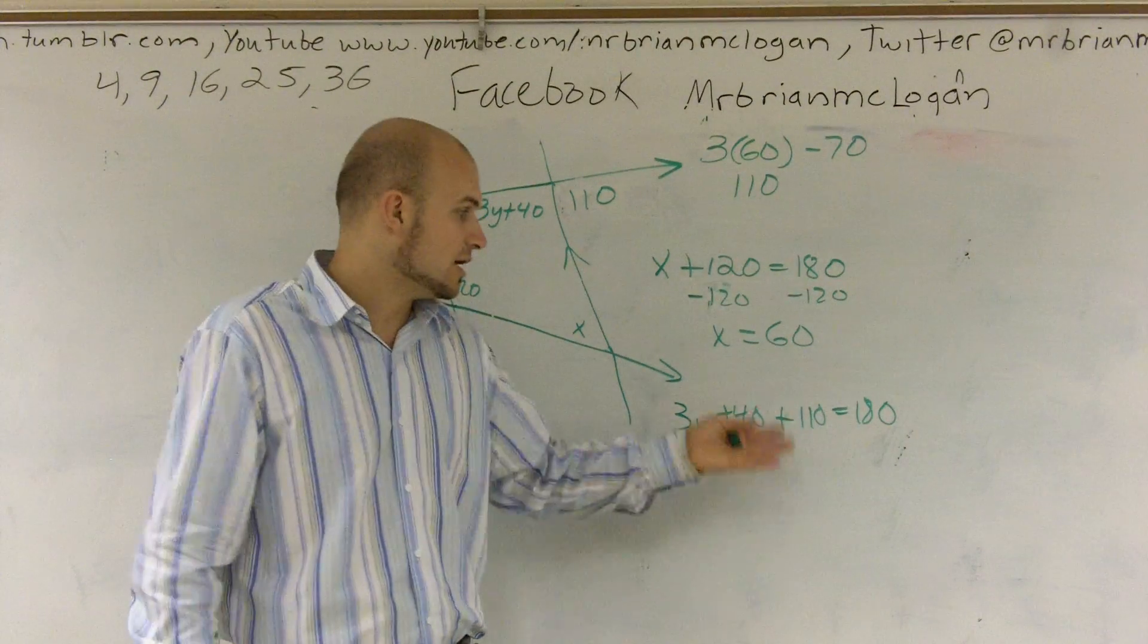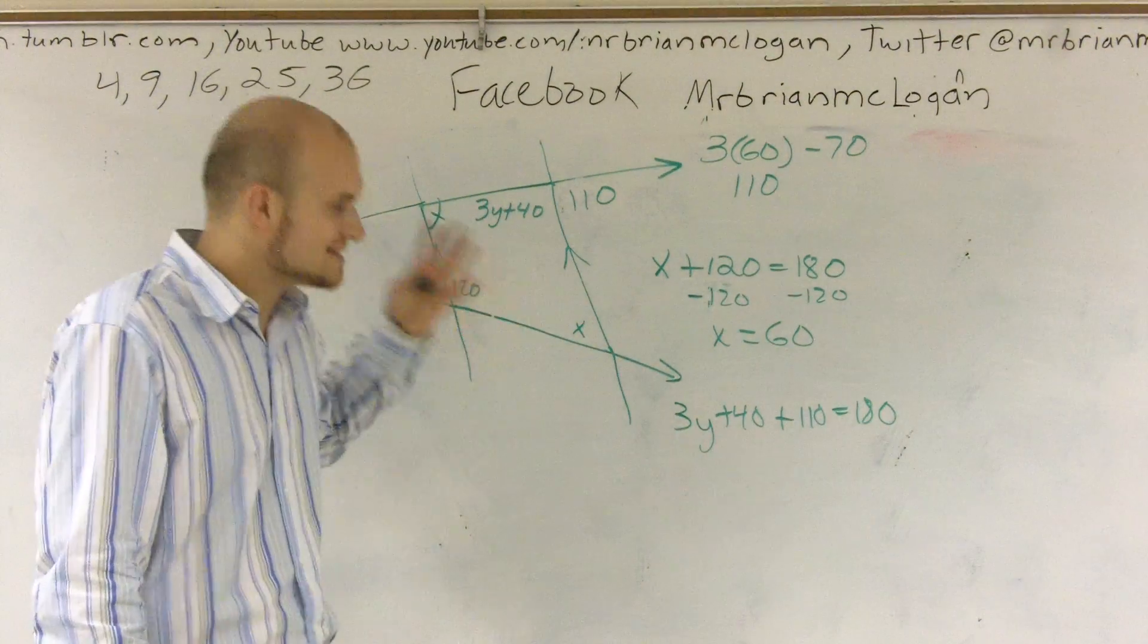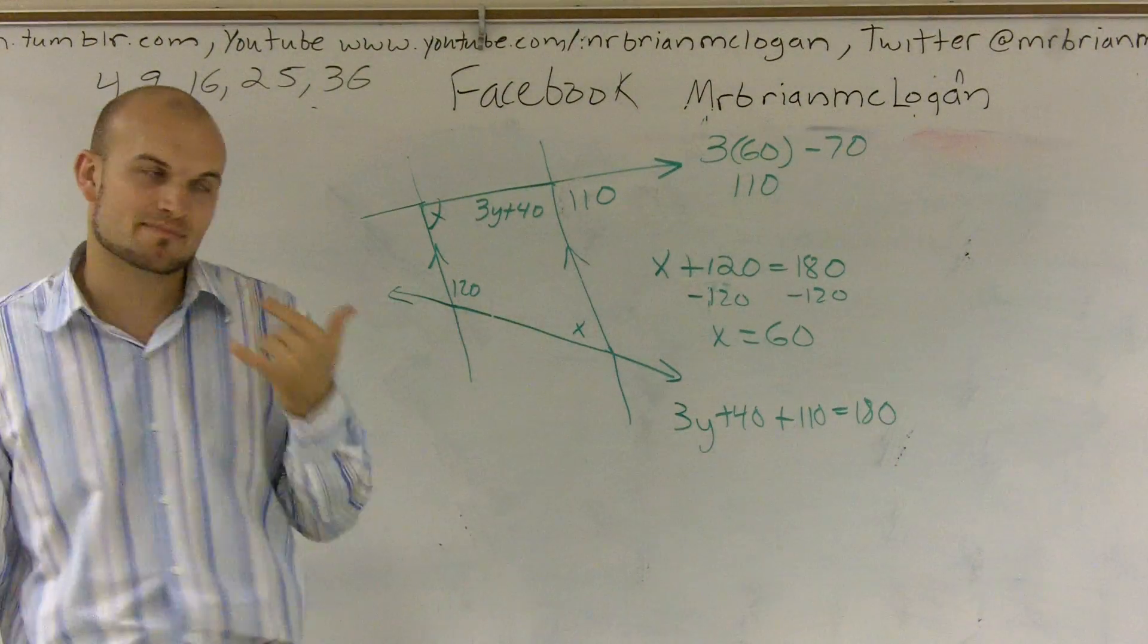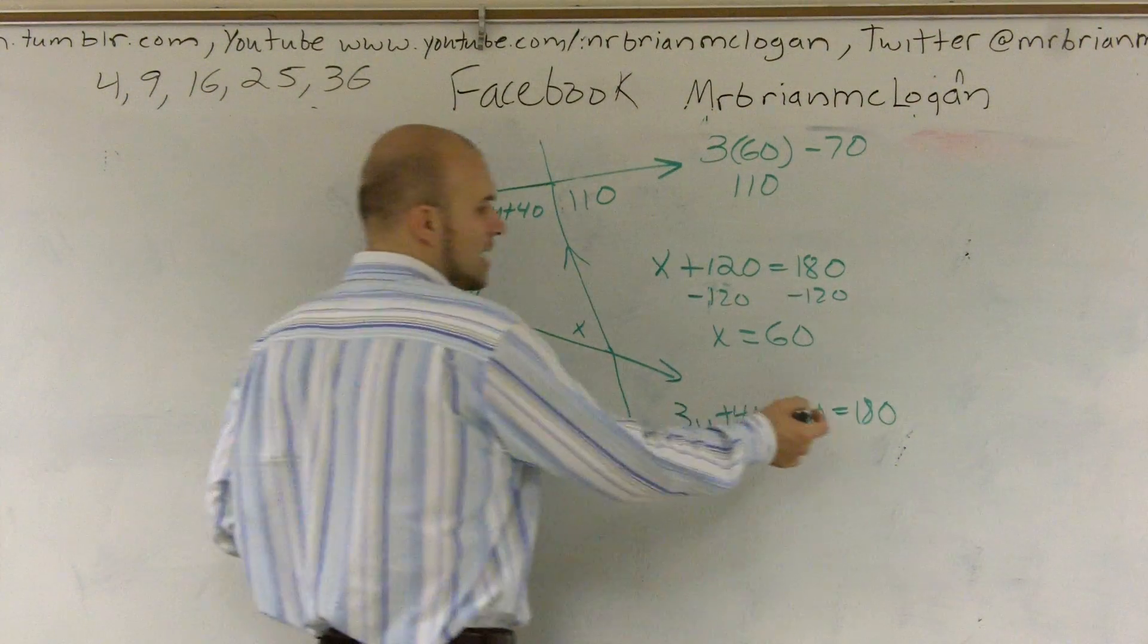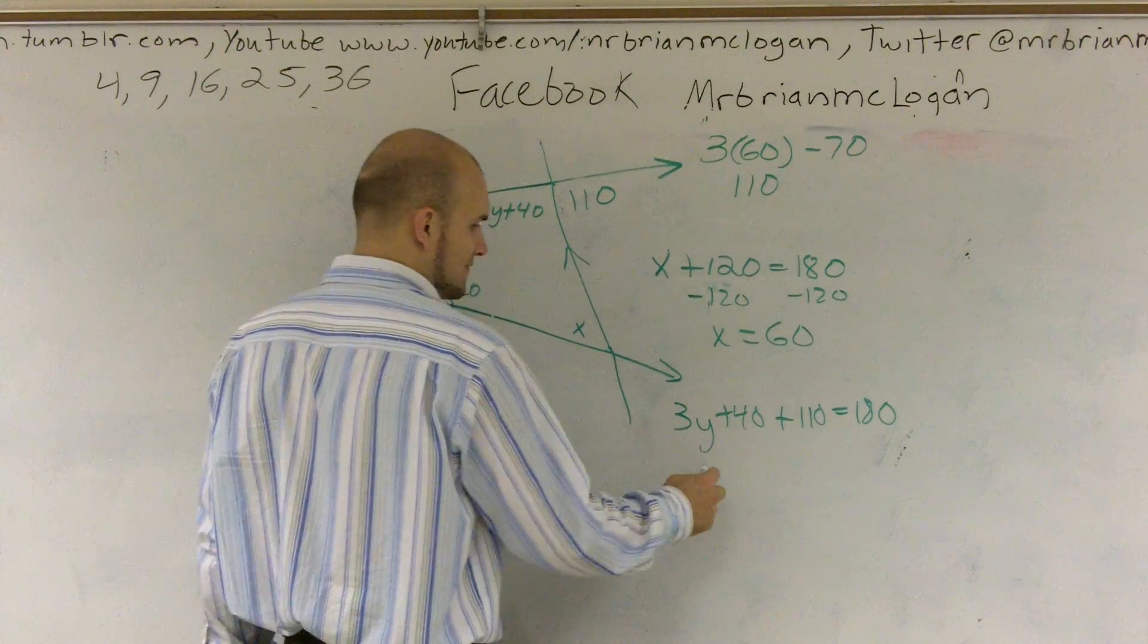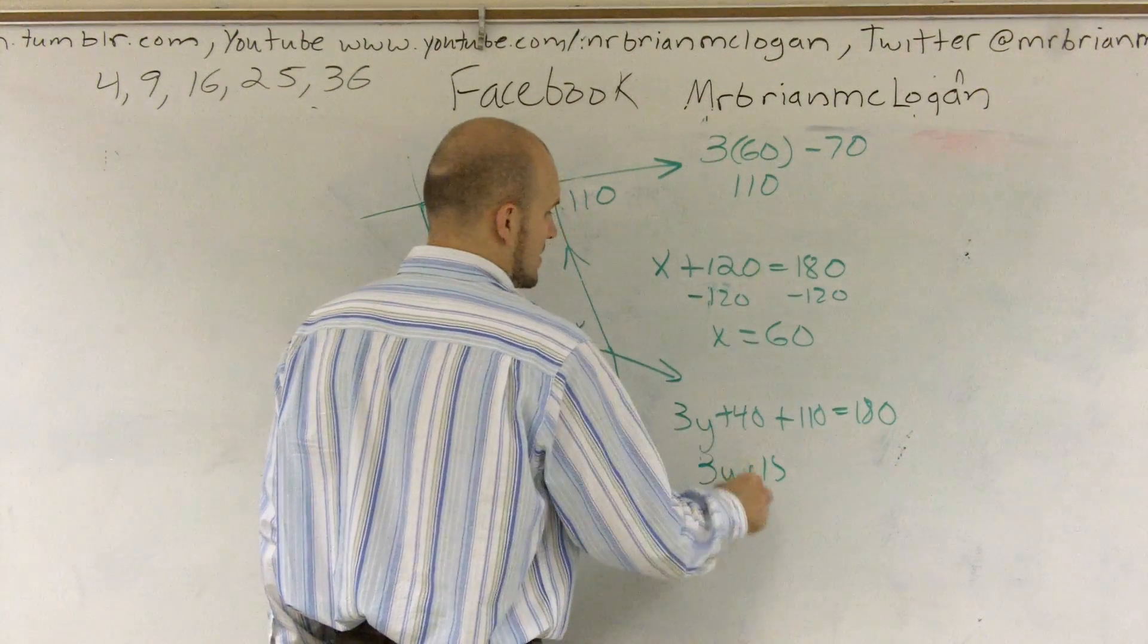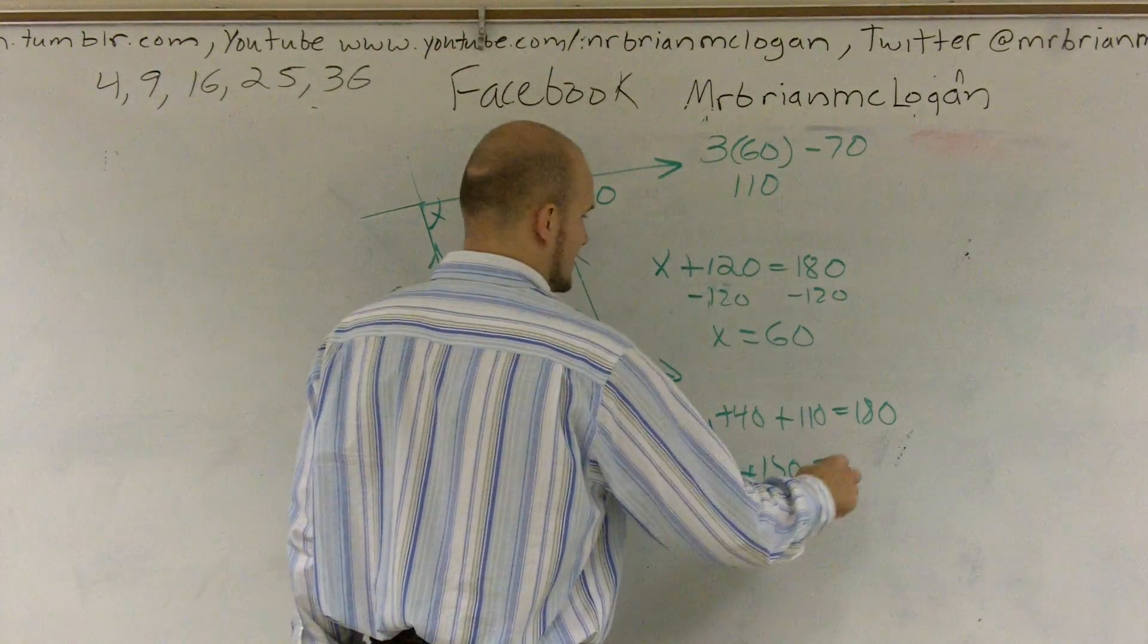But I positively know that two angles that are supplementary, meaning they make a straight line, add up to getting 180. So therefore, I get 3y plus 150 equals 180.